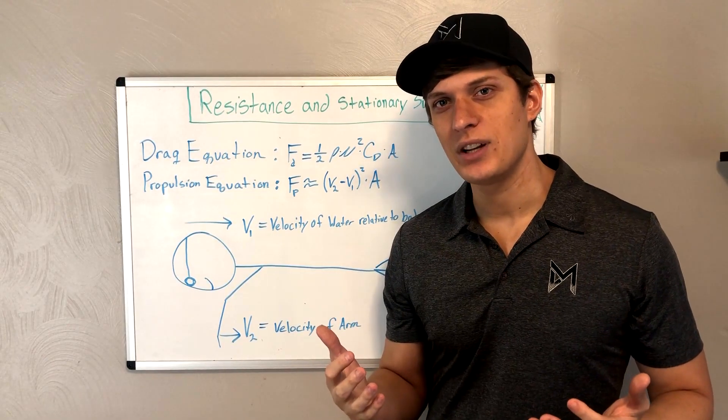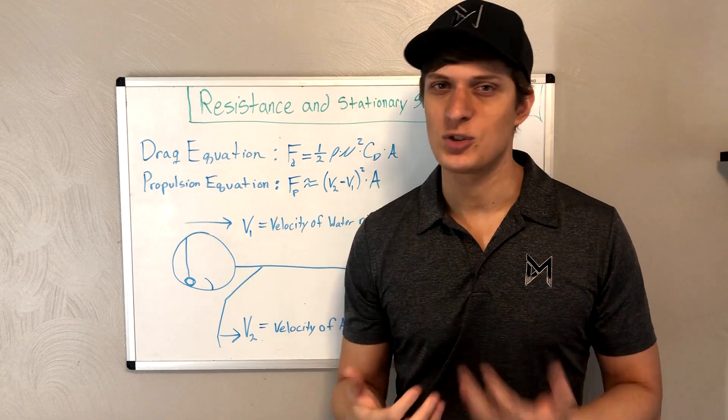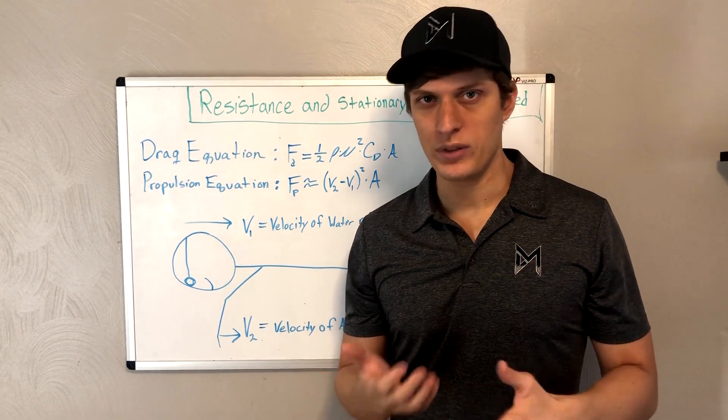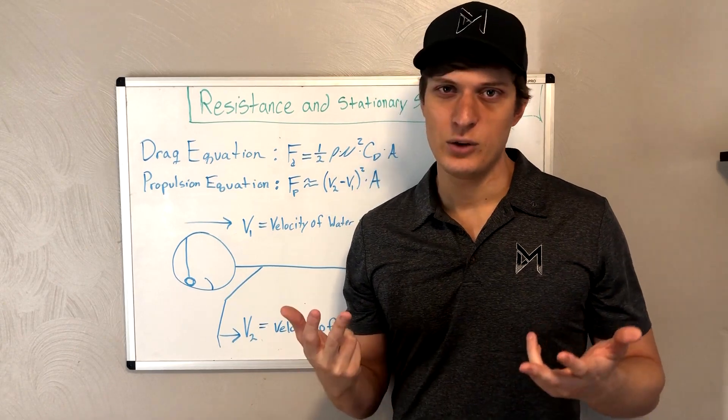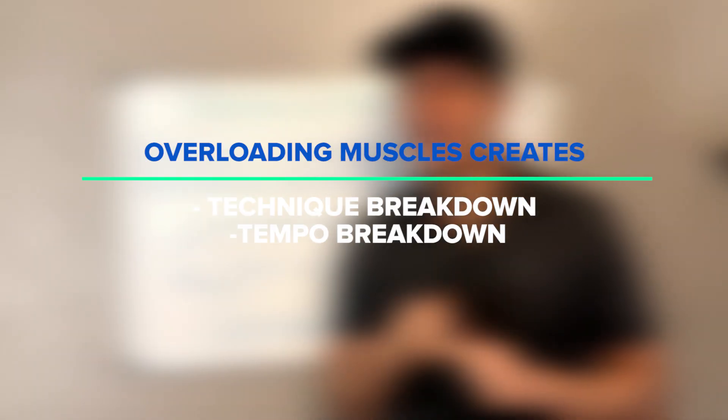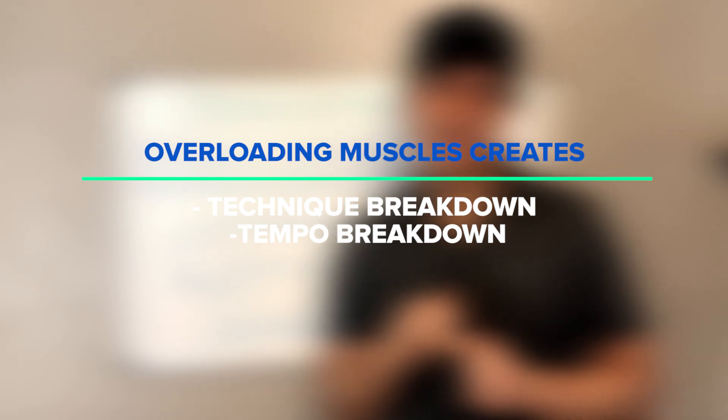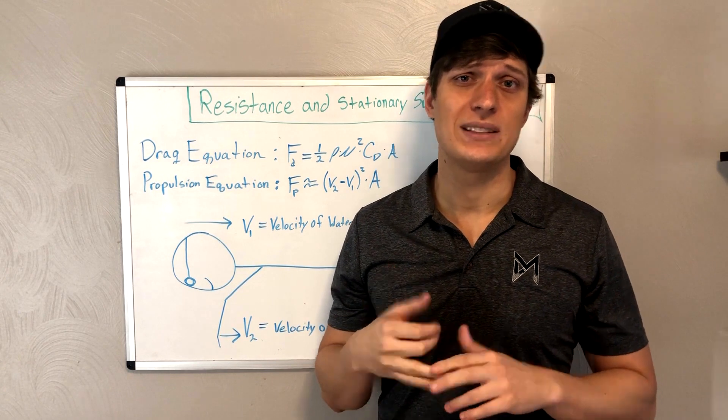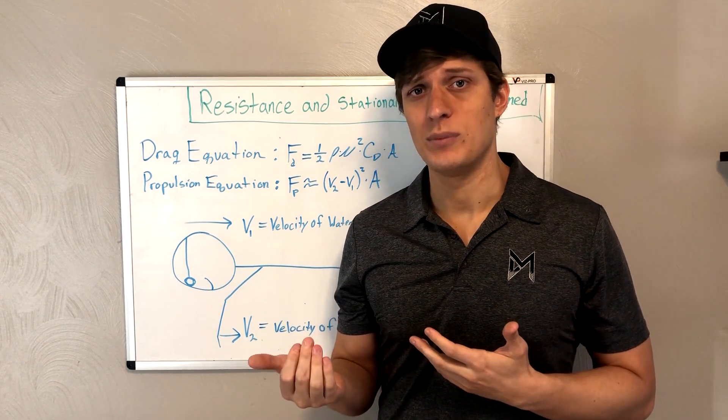So this is why when we swim stationary, the forces on our arms drastically increase. And if the swimmer isn't powerful enough to deal with these increased forces, then two things will happen. You'll have a major breakdown in tempo, and you'll have a major breakdown in technique. This breakdown in technique could lead to injuries down the road, bad habits, and also slower swim times in races.